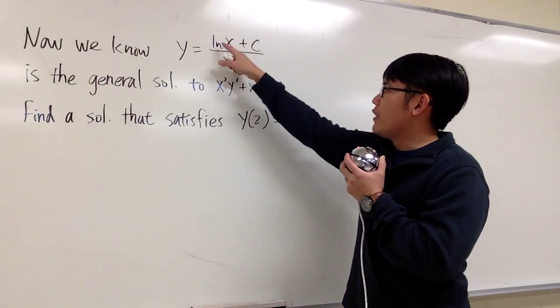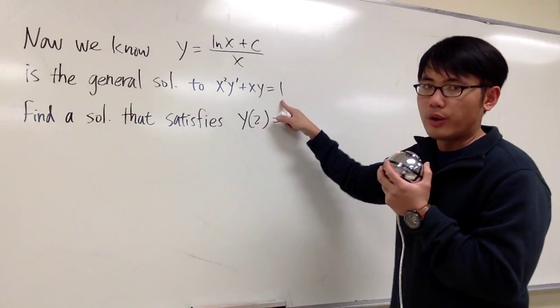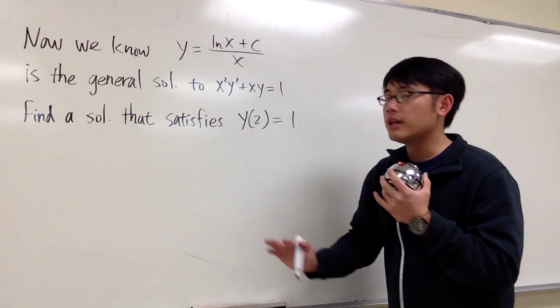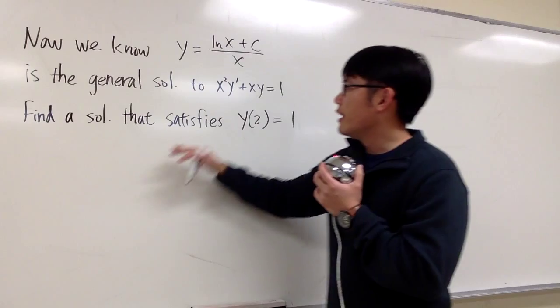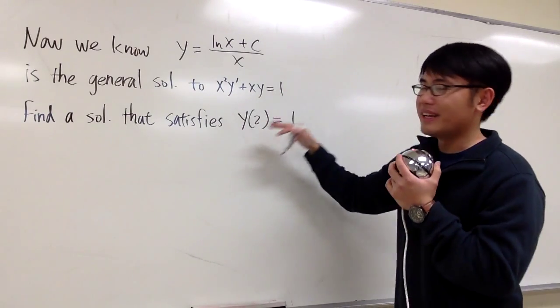Now we know y equals lnx plus c over x is the general solution to this differential equation. And we would like to find a specific solution that satisfies this differential equation and also satisfies the initial condition.